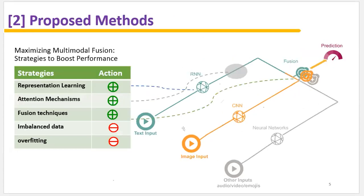Our strategies are: firstly, to improve the representation learning for better feature extraction, and this is associated with the neural networks. Secondly, to use attention mechanisms to dynamically focus on the relevant information. And thirdly, to explore more fusion techniques.